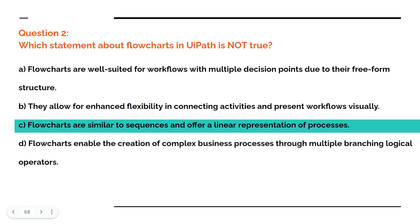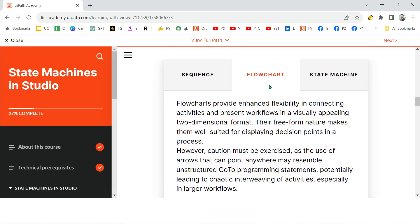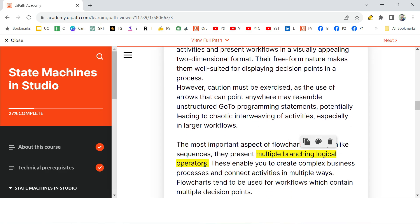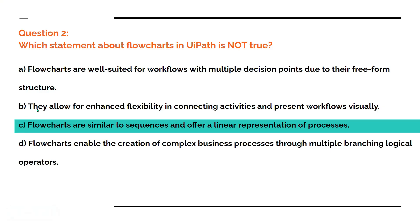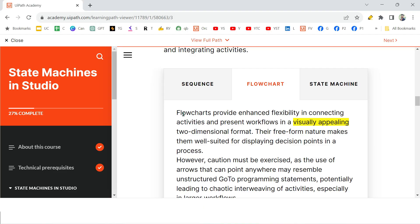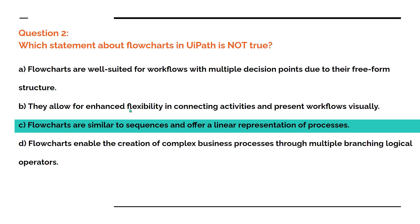The right answer is C — flowcharts are similar to sequences and offer a linear representation — that is wrong. Option A is correct: flowcharts are well suited for workflows with multiple decision points; the keyword here is 'multiple decision points.' Option B is correct: they allow enhanced flexibility in connecting activities and present workflows visually. Notice how highlighting keywords makes it easier to remember and determine right from wrong answers.